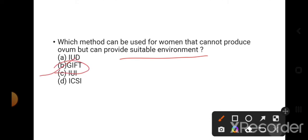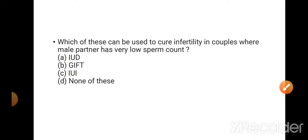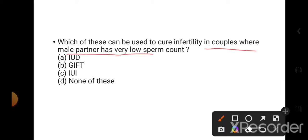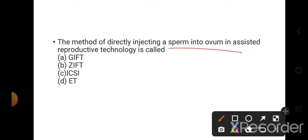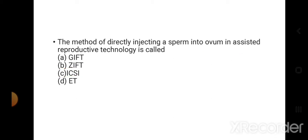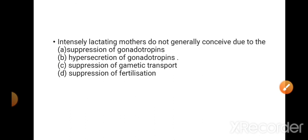Which of these can be used to cure infertility in couples where the male partner has low sperm count? The technique used is IUI, intrauterine insemination. This is the right answer. Method of directly injecting a sperm into an ovum in assisted reproductive technology is called GIFT, ICSI, or ET. The right answer is ICSI, intracytoplasmic sperm injection.